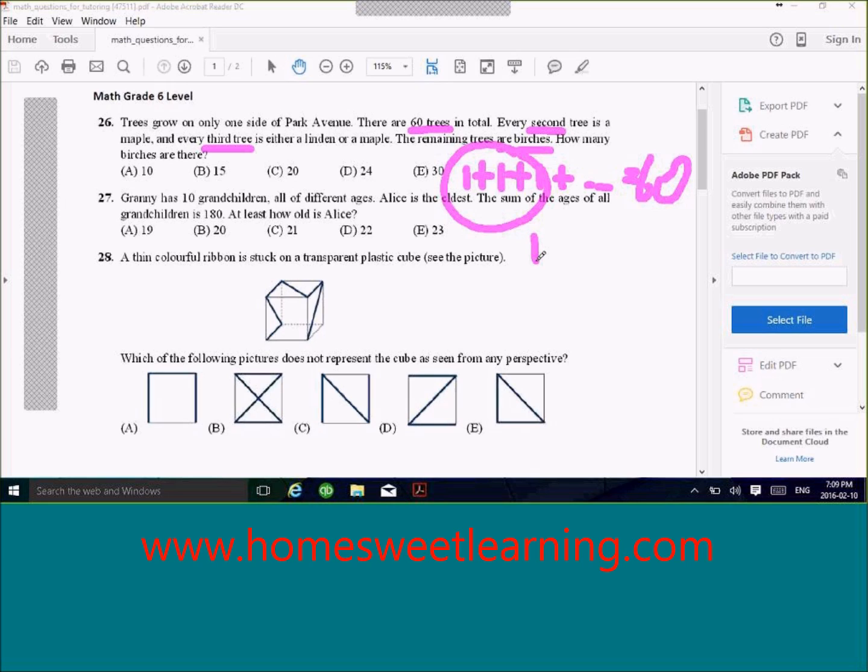So that means every first tree is birches, so when you group the first tree into one group and subsequently the next three trees into another group, then the number of birches will actually be how many groups of three trees there are.